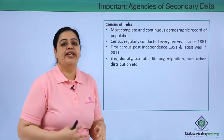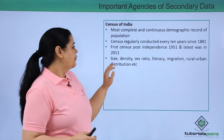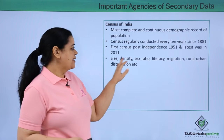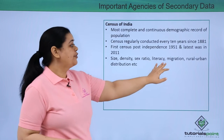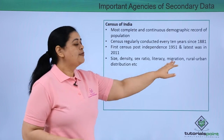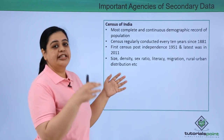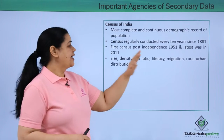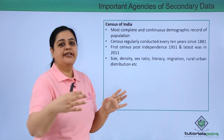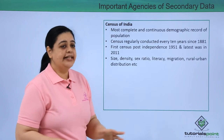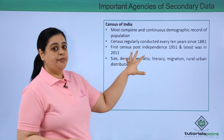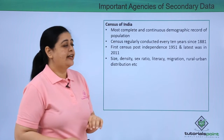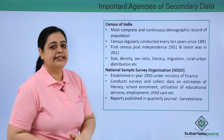The next census would be happening in 2021. What exactly does the Government of India collect? It collects data on size, density, sex ratio, literacy rate, migration from one state to another, rural-urban distribution, and income. There are many factors on which data gets collected, making this the most important source of secondary data.